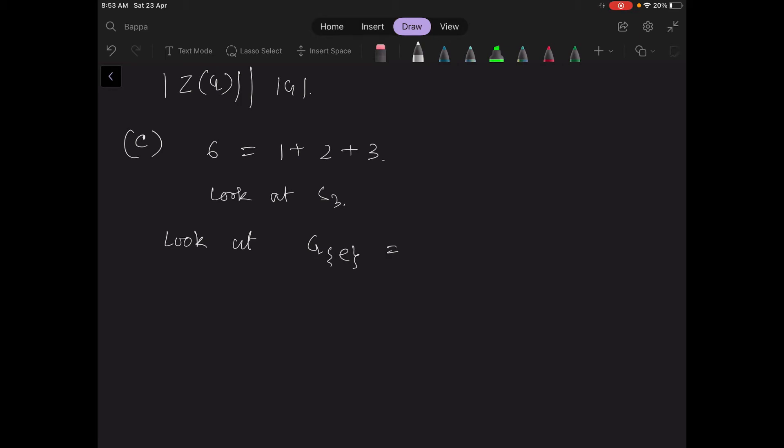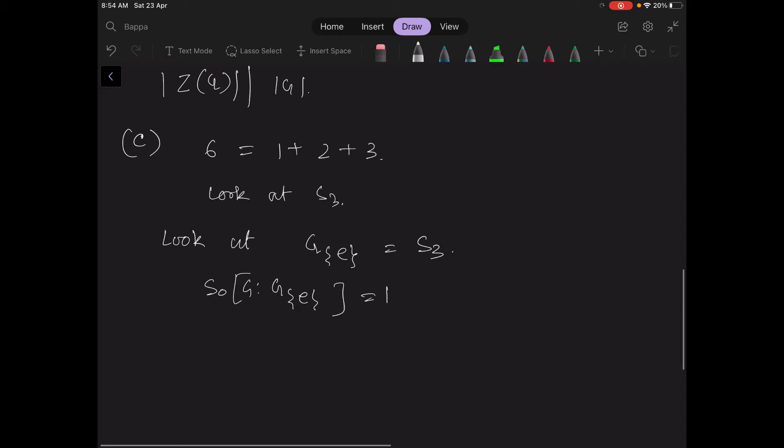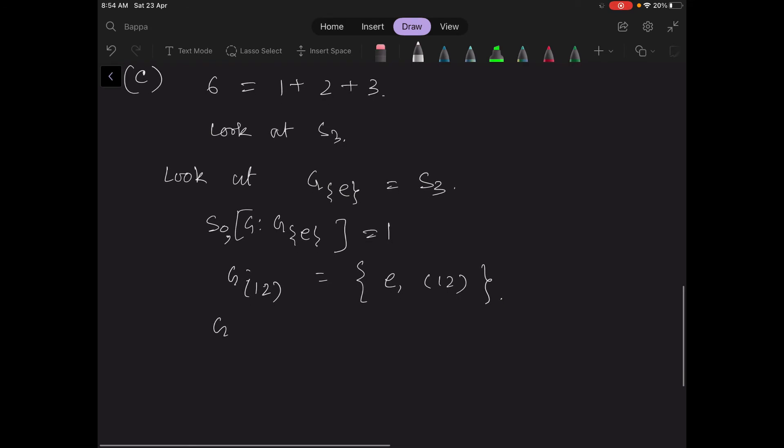This is actually single, this is actually all those elements, this is S3. So G(e) is equal to G, and G(1,2) is equal to all those elements that commute with (1,2). But there are only two such, which are e and (1,2) itself.